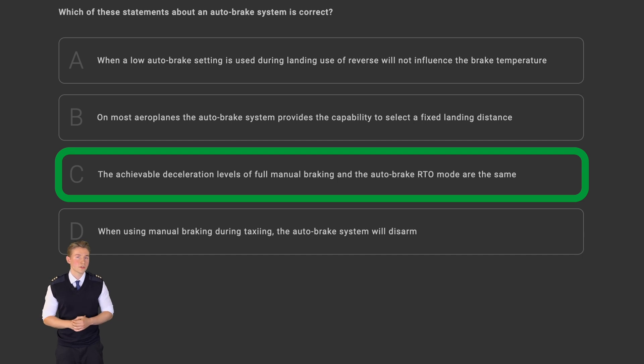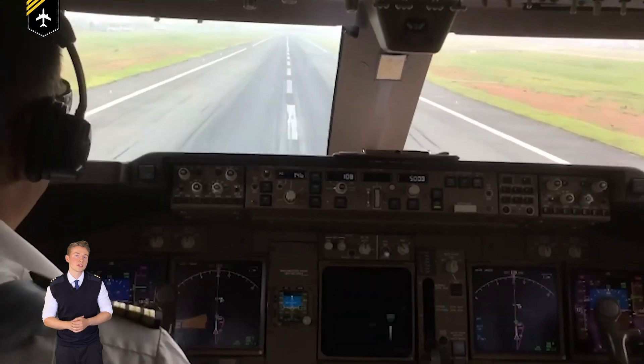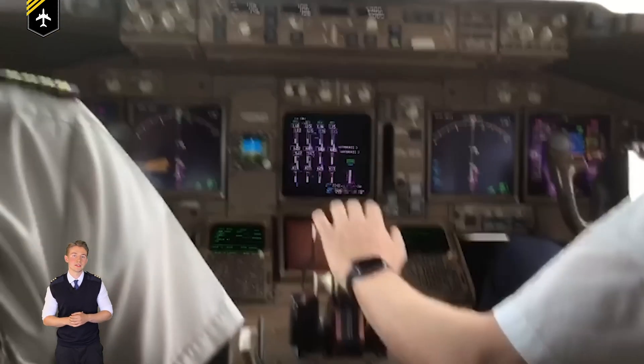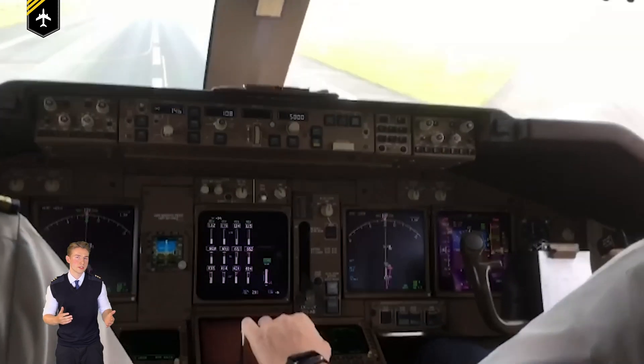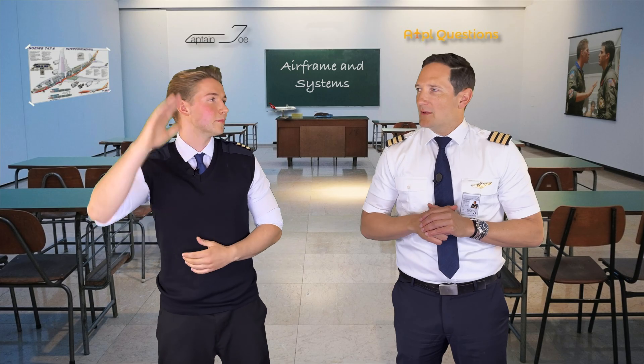Therefore, answer C is correct. The max or RTO setting applies maximum brake pressure and deceleration once the thrust levers are brought to idle when certain type related parameters are met. For example, certain ground speed limits during takeoff roll. The RTO brake pressure equals the same pressure as if you would apply full manual braking.